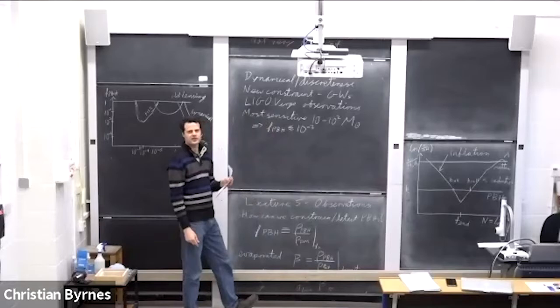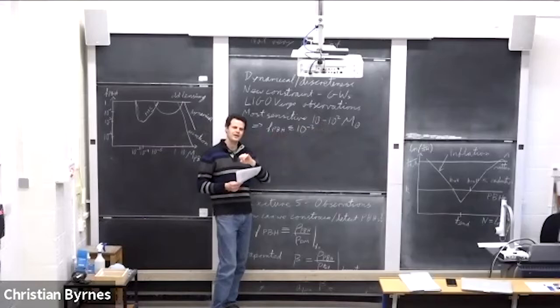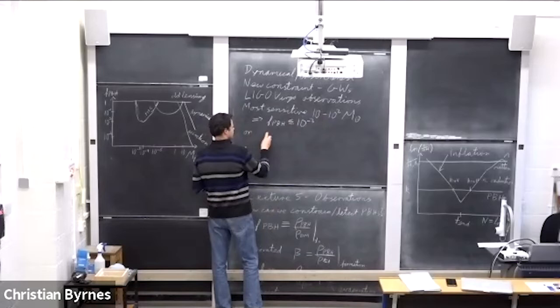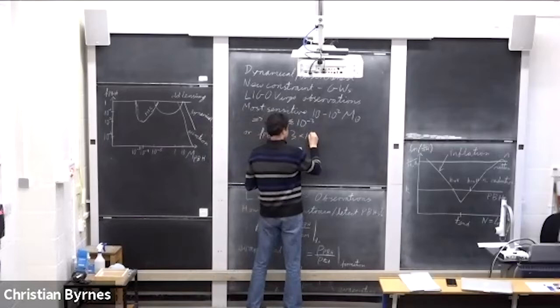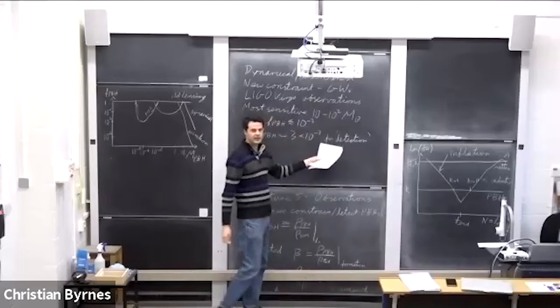These detectors are most sensitive to a specific frequency corresponding to the arm length of the detector, which maps to about 10 to 100 solar masses. In this range, they can constrain fpbh to less than about 10^-3. If you treat the LIGO/Virgo events as a detection of only primordial black holes and ask which fpbh gives the correct merger rate, the answer is fpbh of about 3×10^-3 with a central mass around 20 solar masses.